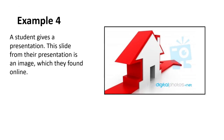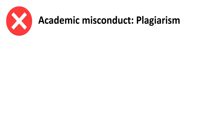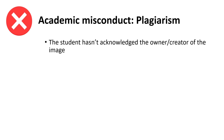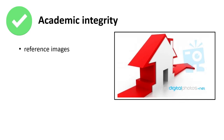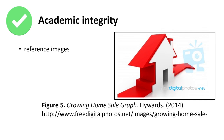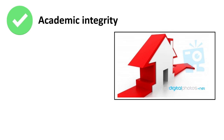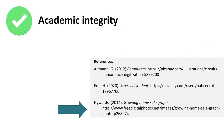Example four: a student gives a presentation, and a slide from their presentation is an image they found online. This is academic misconduct because it is also plagiarism — the student hasn't acknowledged the owner or creator of the image. One way to avoid this is to reference the image: add a figure number and attribution including the title, the owner or creator, the year, and a hyperlink if available, then reduce it to fit below the image. Alternatively, you can add a slide at the end with a list of links for each image used. Check with your lecturer about assessment requirements.